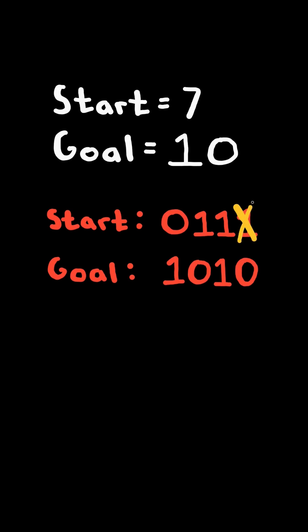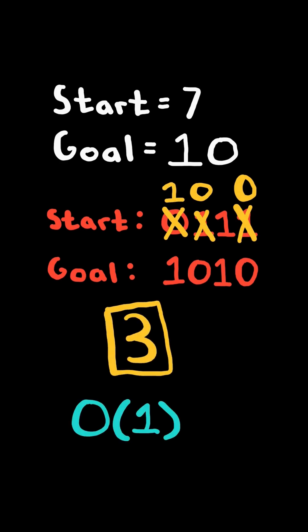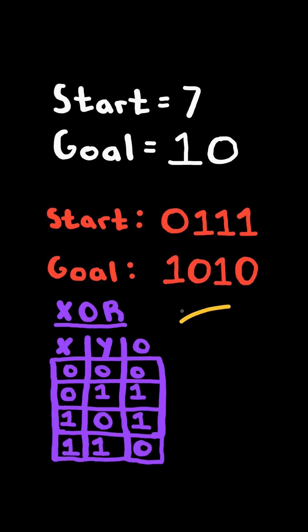We can flip the first bit to a zero, the third bit to a zero, and the fourth bit to a one. Return the amount of flips needed to make start equal to goal. We will solve this in O(1) time and space.